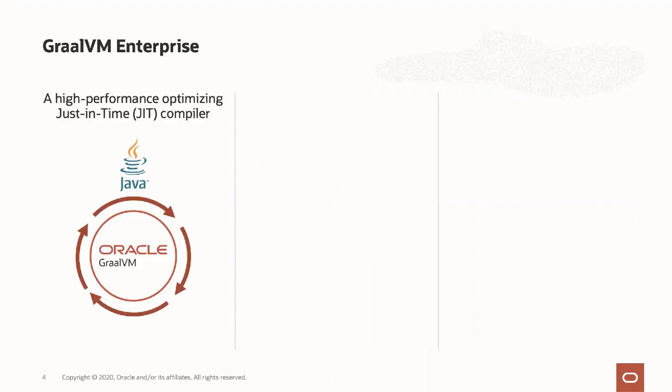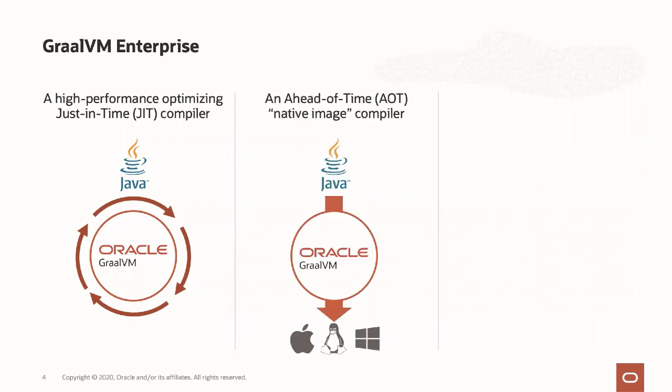GraalVM has three key components that we focus on. The first is our JIT compiler, which is the Graal compiler — a bytecode compiler that plugs into the HotSpot JVM and produces more efficient machine code to accelerate Java applications. So Java, Scala, anything that's Java bytecode can take advantage of the performance optimizations that the Graal compiler provides.